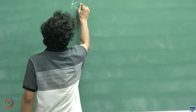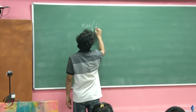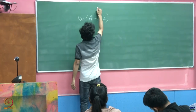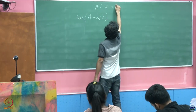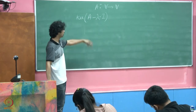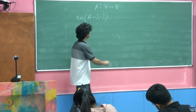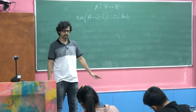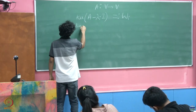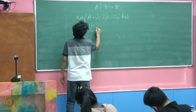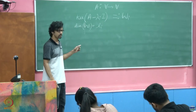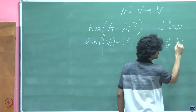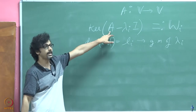Of pivotal importance in our studies has been this particular subspace W_i, where A is of course the operator — or you can treat it as a matrix, we will not distinguish them too often here. This is the subspace that we have given a name; we have called it W_i, and it is precisely the dimension of W_i — perhaps denoted by the variable l_i — which is what we call the geometric multiplicity of lambda_i, which is an eigenvalue of A.